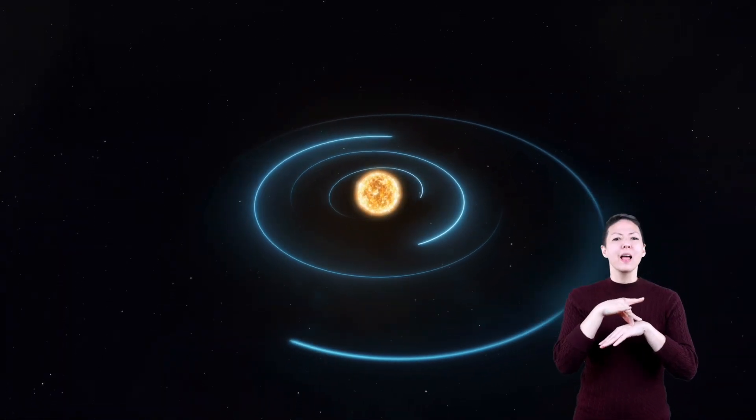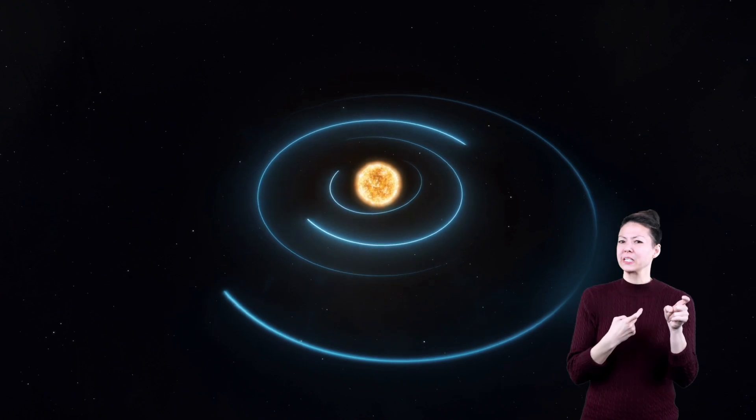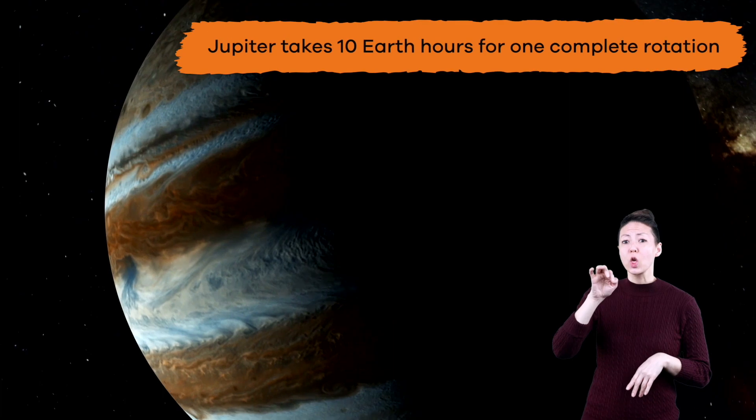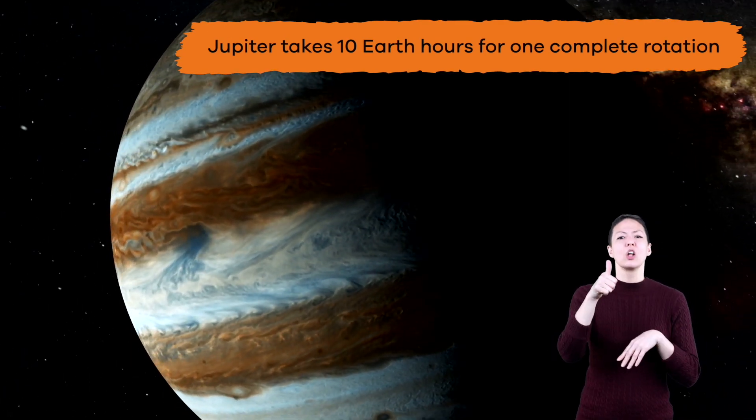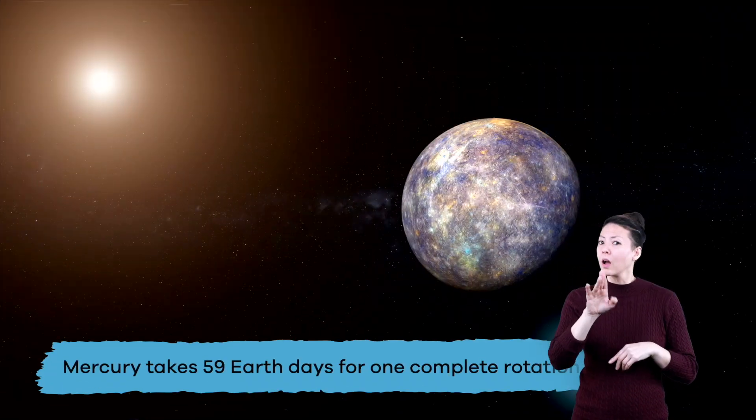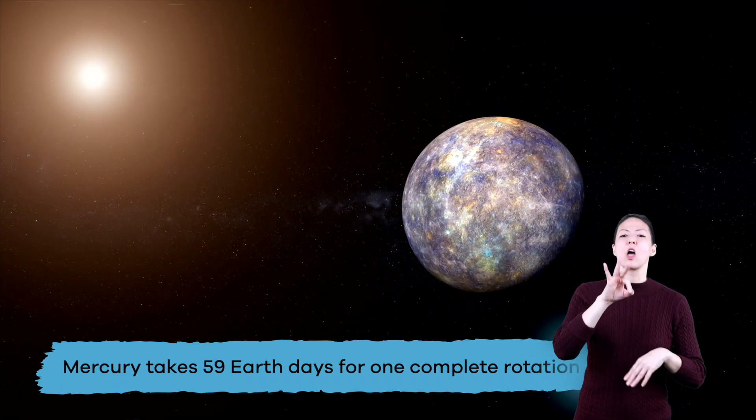And just like the planets don't revolve at the same speed, they don't spin at the same speed either. On Jupiter, it takes less than 10 Earth hours to make one full spin. But on Mercury, it takes 59 Earth days!